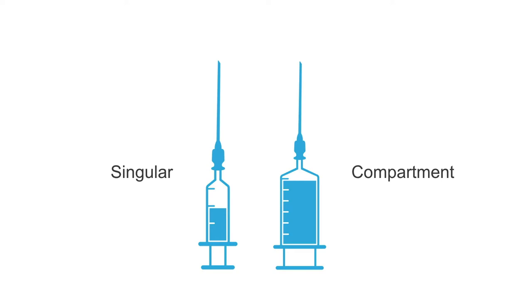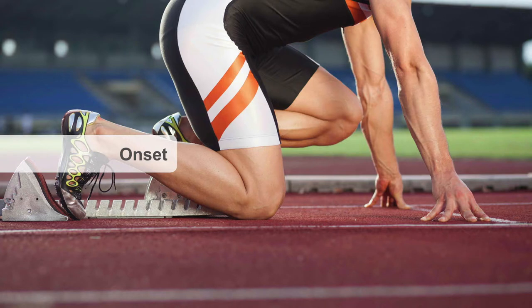Compartment or plane blocks require more — usually around 20 to 30 cc's or milliliters of fluid. It is with these larger volume blocks where you should be conscious of the maximum dosing for the particular agent you choose. For these blocks, you will rely upon the diffusion of the agent along the fascial planes, not hydrodissection. I will often dilute these agents with 10 cc's of saline to promote this diffusion, so the anesthetic spreads all along the fascial plane and captures the entirety of the compartment.